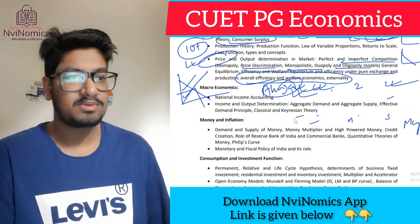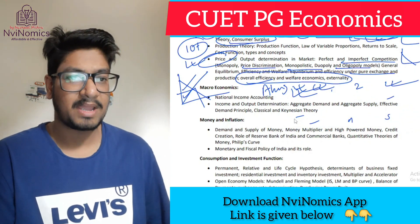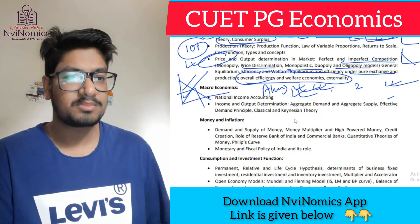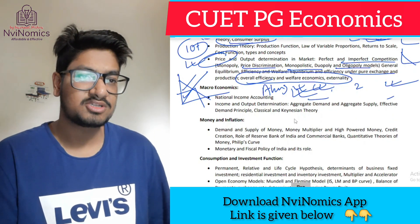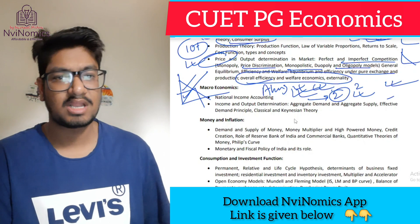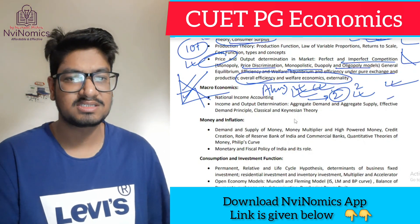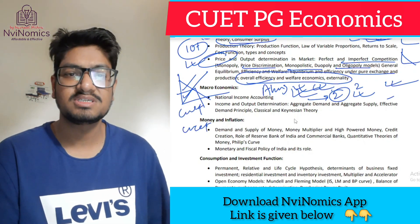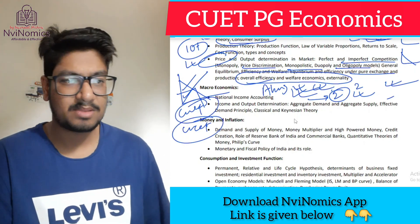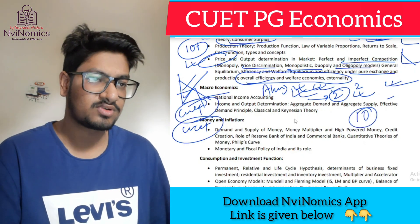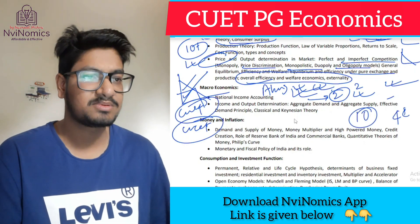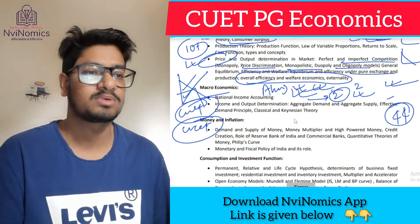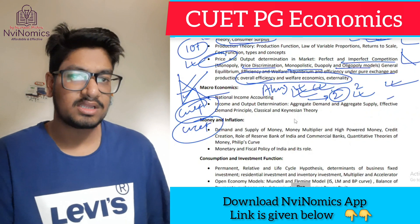Regarding macro, national income accounting is a must — at least two questions are asked every year. This is CUET; earlier it was CUCET, even then the syllabus was the same. The code name has changed from 44 to not-10, but the syllabus has not changed, so no need to worry.